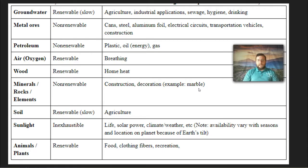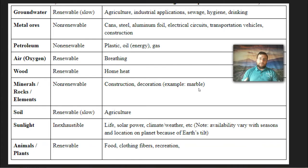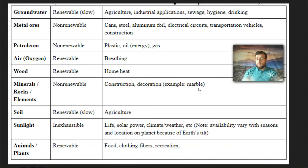Petroleum lasts about two centuries at the current rate of consumption, but consumption is increasing so it might be less than that. Wood is renewable — as long as you can plant more trees, you can have more wood — and we use it for heat, paper, and construction. We also get oxygen from the air, which is completely renewable because life continues doing photosynthesis and renewing that resource.